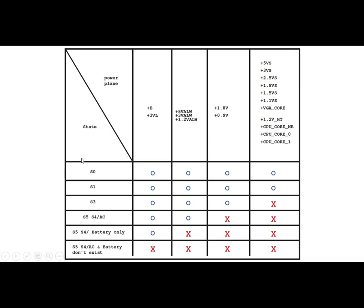As you can see here, we have basically the states. We have S0 state, S1, S3, S5, and S4. So we have basically six states from S0 to S5. And over here we have the power plane, where we have the name of signals for the motherboard.